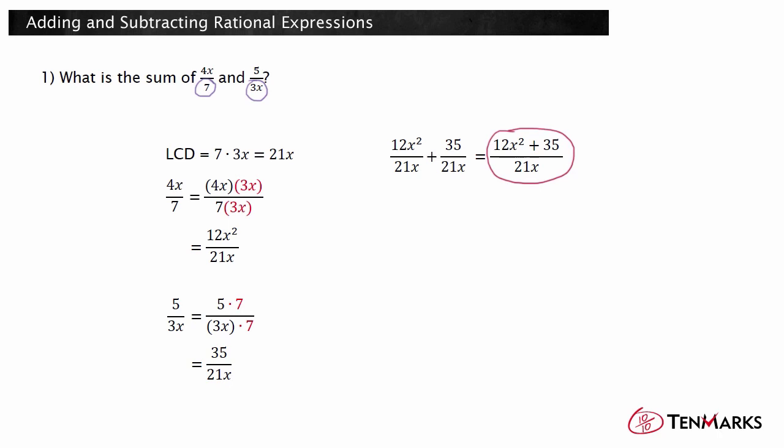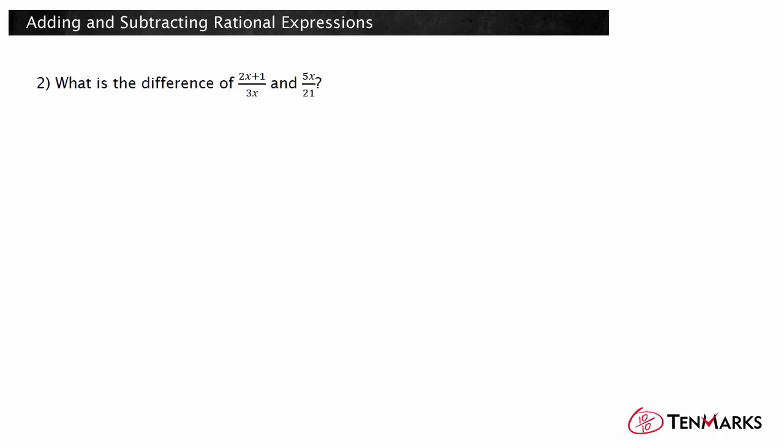Let's look at another example. What is the difference of 2x plus 1 over 3x and 5x over 21? First, find the LCD of the denominators 3x and 21.